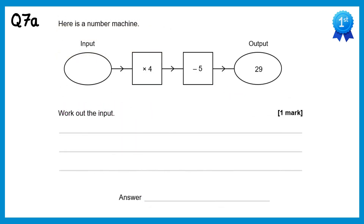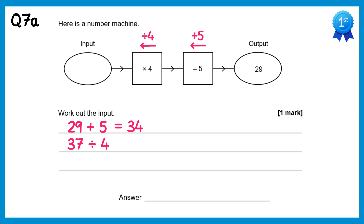For this number machine the output is 29 and we need to find the input by working backwards using inverse operations. The last operation was minus 5, so we do plus 5: 29 + 5 = 34. Then the inverse of times 4 is divide by 4: 34 ÷ 4 = 8.5. So the input is 8.5.